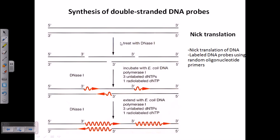Now we have talked about the basic process of northern blotting, but we need to know how to design and make the probes. Probes can be of two different types: double-stranded or single-stranded. For double-stranded probe synthesis, we can use two different methods — one is the nick translation process, and another is random priming utilizing a PCR technique.